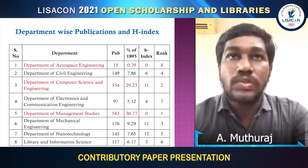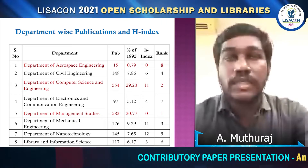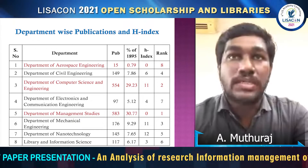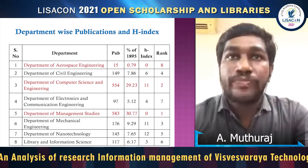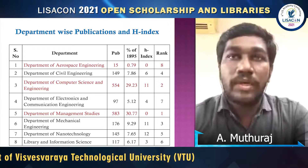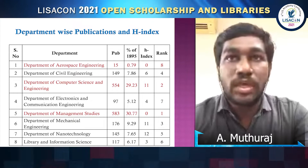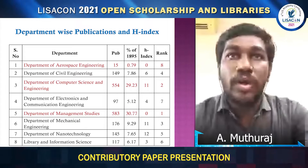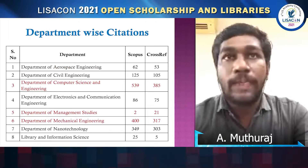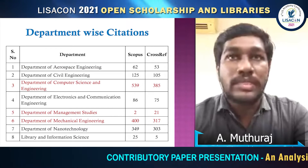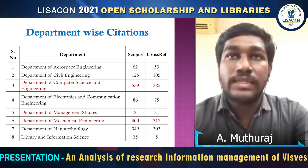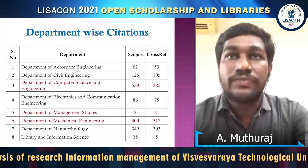Table 2 shows department-based research publications and h-index. The Department of Computer Science and Engineering has published 554 publications with an 11 h-index, placing it in the highest position. It is followed by the Department of Management Studies, which published 583 publications with a 0 h-index, placing it second. Table 3 shows department-based citations: the Department of Computer Science and Engineering received 539 citations from Scopus and 385 citations from Google Scholar.